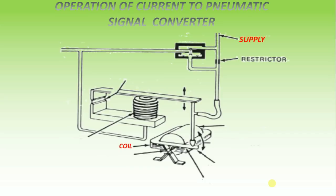A coil positioned in the field of a permanent magnet reacts to the current by producing a tangential thrust proportional to the input signal flowing through it.